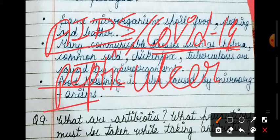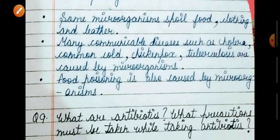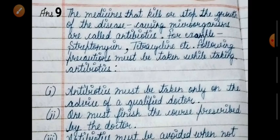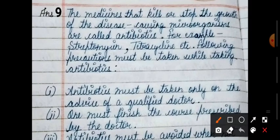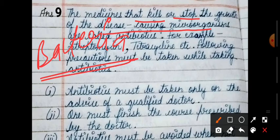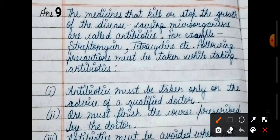Last question: what are antibiotics? Antibiotics are medicines which kill or stop growth of disease-causing microorganisms, especially bacteria. Antibiotics are used to kill bacteria. For example, streptomycin and tetracycline. These are some examples which are very common antibiotics.